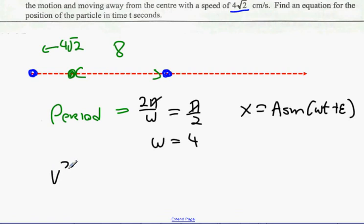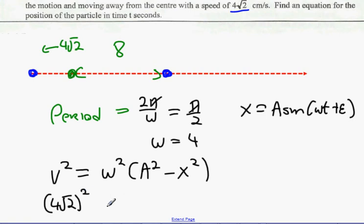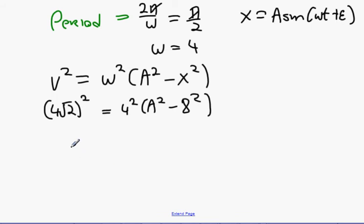Next thing I'm going to do is v² equals ω² amplitude squared minus x². I'm hoping to find out what the amplitude is from this. My velocity is 4√2. It doesn't really matter if it's positive or negative because I'm going to square it anyway. Then it's going to be ω² which is 4² amplitude squared minus x².